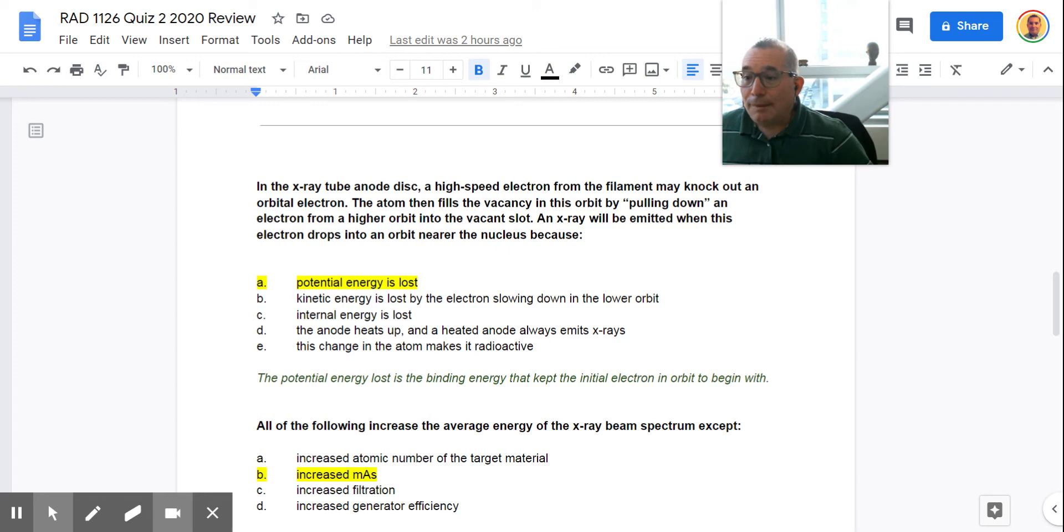So why does this happen? And that's because the potential energy is lost. And if you look down here, I kind of give you a little definition. The potential energy is lost because it's the binding energy that kept that initial electron in orbit. So it's the binding energy that is transferred to the electron. I'm sorry, to the photon that comes out of the patient.